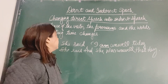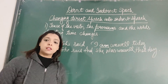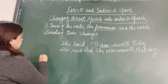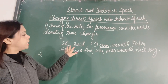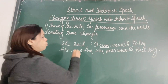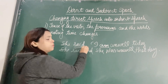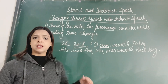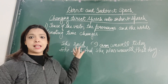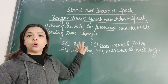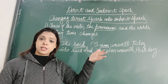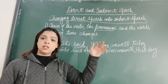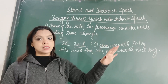For example, 'She said I am unwell today.' 'Today' will become 'that day' — she said that she was unwell that day. These are the words which denote time. Next, students, we see that mostly the reporting verb is in past tense — said, told, asked, requested, demanded — these are all in past tense.